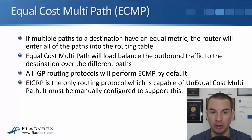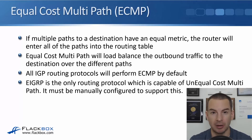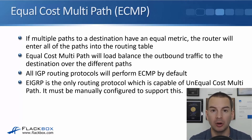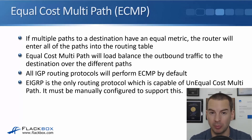All routing protocols, all your IGPs, will perform equal cost multipath by default. So RIP will do it, ISIS, EIGRP, OSPF — they will all do equal cost multipath by default, meaning if they learn multiple paths to get to the same destination and those paths have got the same cost and it's the best path, it will put them all in the routing table and load balance across all of those paths.